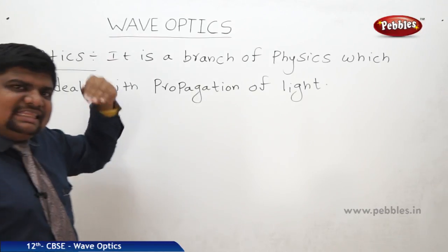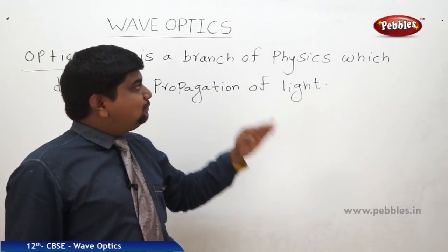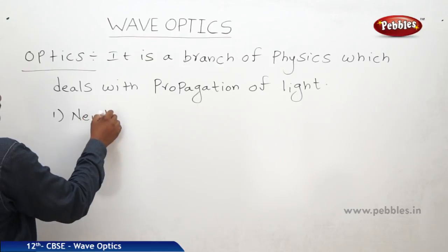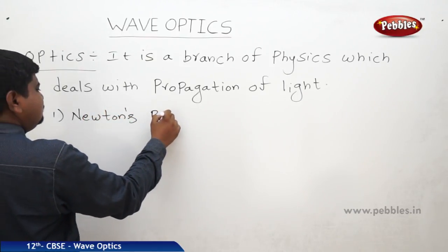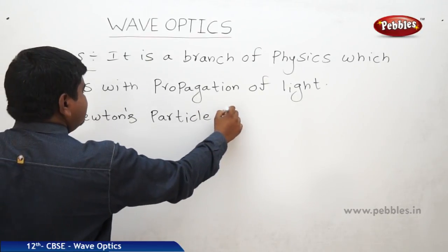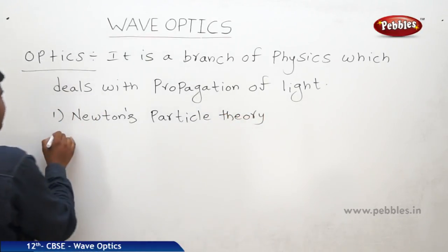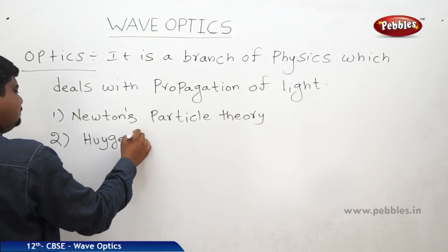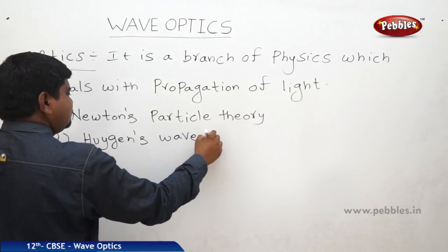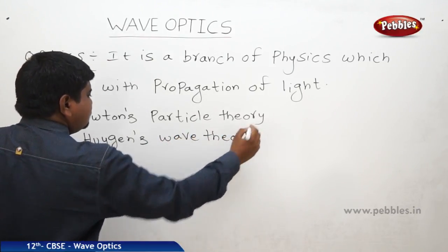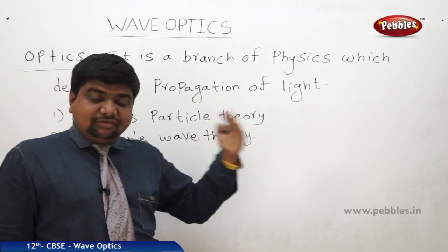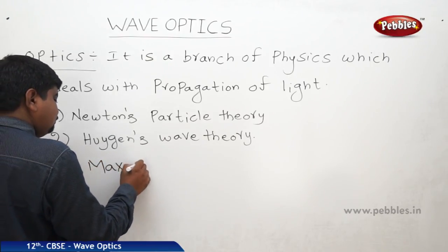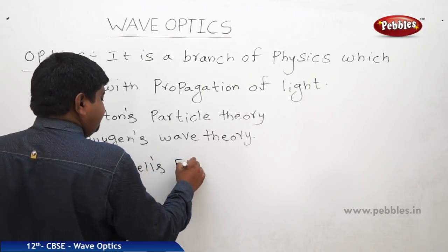There are many theories developed to understand the propagation of light. The first one is Newton's particle theory, the second one is Huygens' wave theory, and the third one is Maxwell's electromagnetic wave theory.